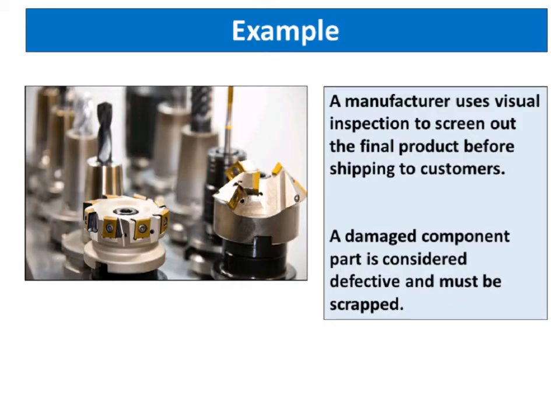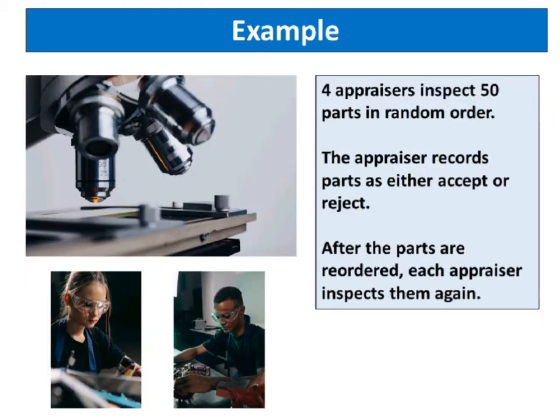The data collected by this survey are examples of ordinal data. Let's take an example. A manufacturer uses visual inspection to screen out the final product before shipping to customers. A damaged component part is considered defective and must be scrapped. Four appraisers inspect 50 parts in random order. The appraiser records parts as either accept or reject. After the parts are reordered, each appraiser inspects them again.